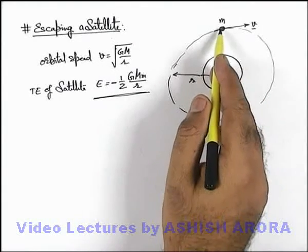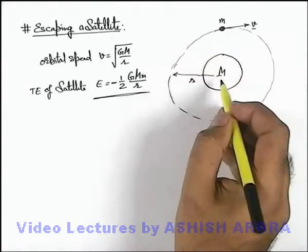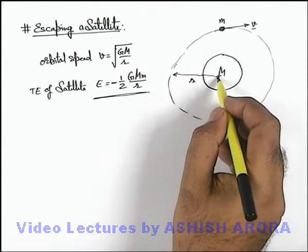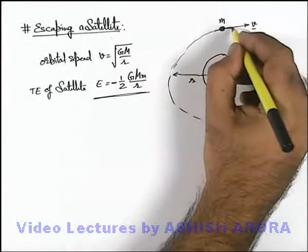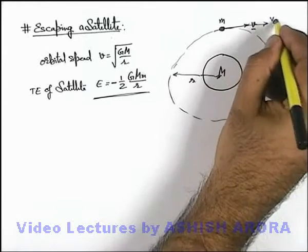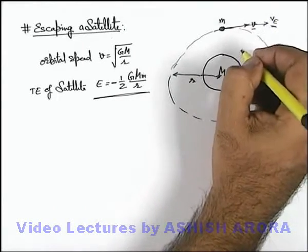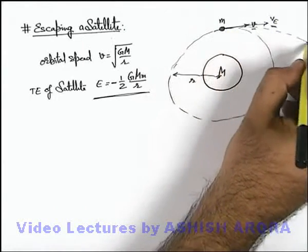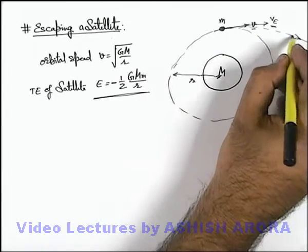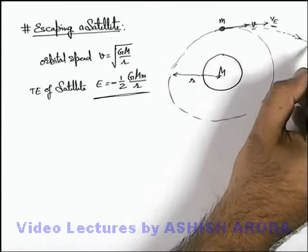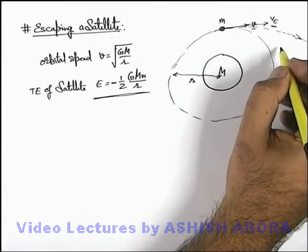Say if we wish to make the satellite escape from the gravitational attraction of this planet, and for this, suddenly we increase the speed from v to v_e, where v_e is the escape velocity. Then in such a way, its speed is increased such that it'll escape to infinity.